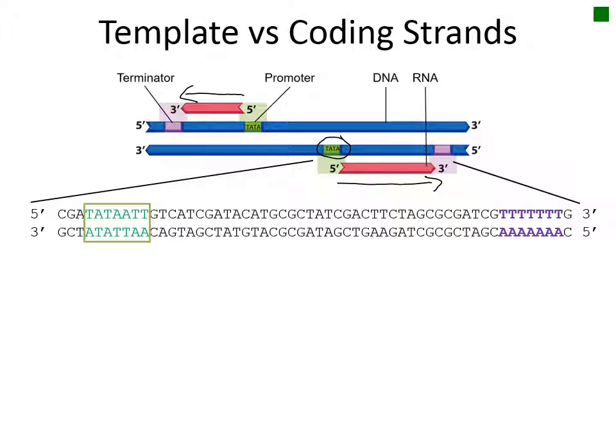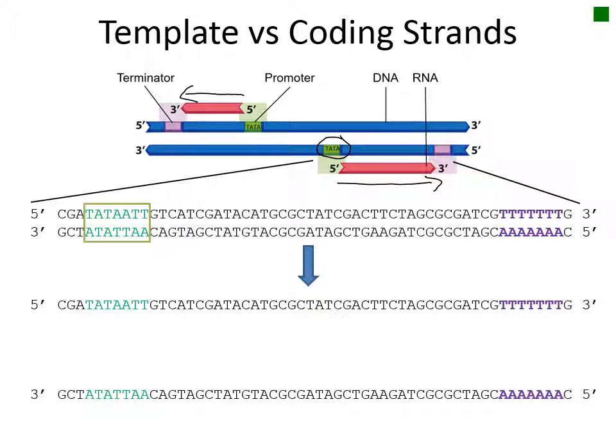As we zoom in, we can now see the nucleotide bases that make up this gene. The boxed green region marks the promoter sequence, and the bold purple region marks the terminator. The first step in transcription is that the two strands of DNA double helix are separated. This is required in order for the DNA base sequence to be read and used as a template to make the RNA sequence.